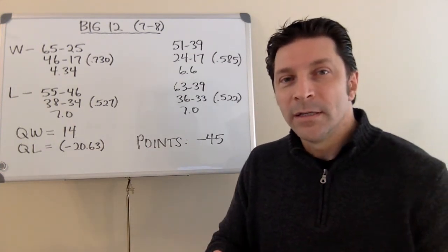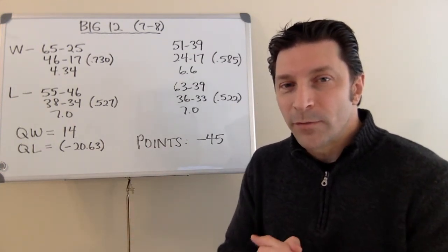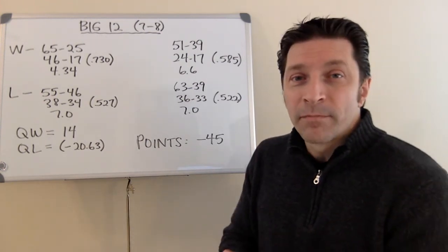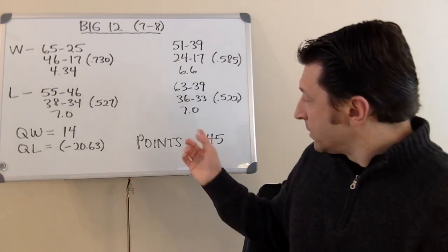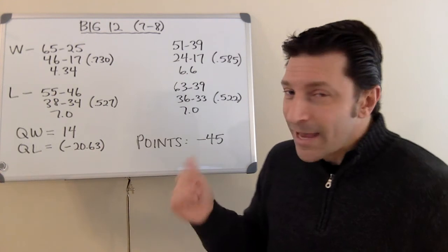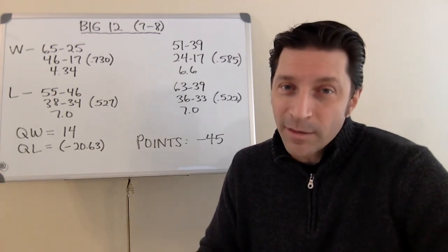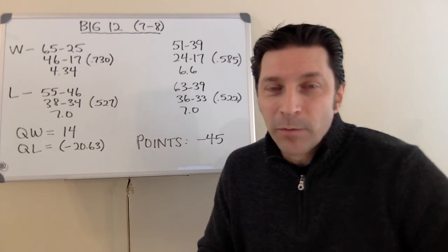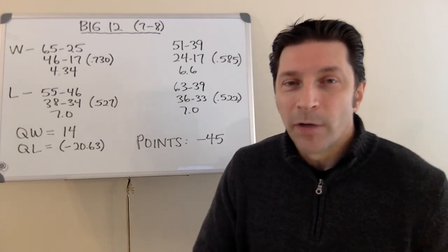So, you take all the wins, you take all the losses and the points for each win and loss, and you subtract the losses from the wins, and this is what the Big 12 shows for its 7-8 overall record, a negative 45 points. How does that compare to the other four leagues? We will find out and would love to get your input as well. Right here on Mark Rodgers TV.